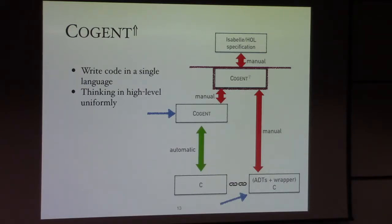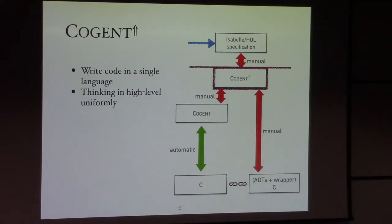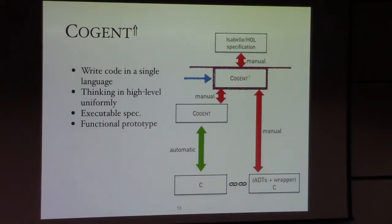Previously, designing programs from Cogent and the ADTs means these languages are too low-level — you still need to concern yourself with avoiding aliasing and whether to allocate on the heap or stack. It doesn't give you a high-level view. Alternatively, designing from the Isabelle spec gives a high-level view, but it's just a set of predicates in higher-order logic, not a program, so it doesn't guide implementation. Now we can start from Cogent-up, which serves as an executable specification and a functional prototype, connecting both the Cogent program and the high-level Isabelle specification.